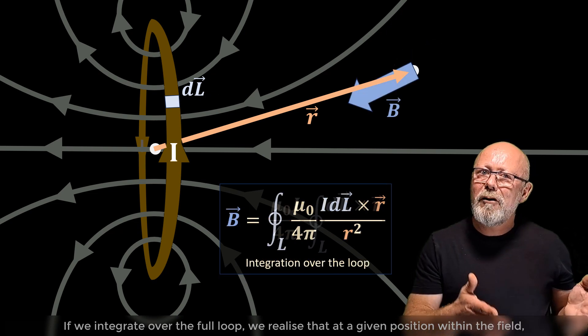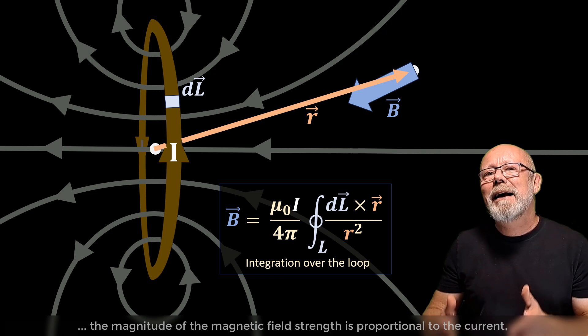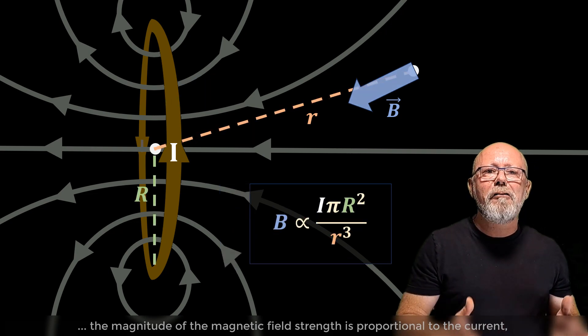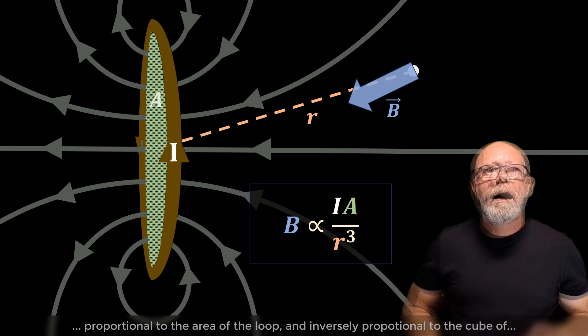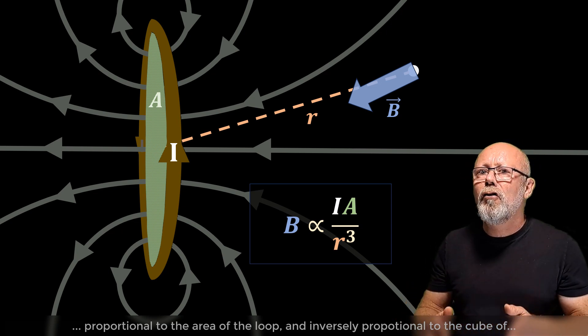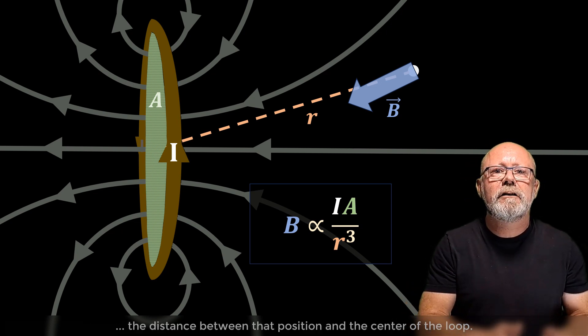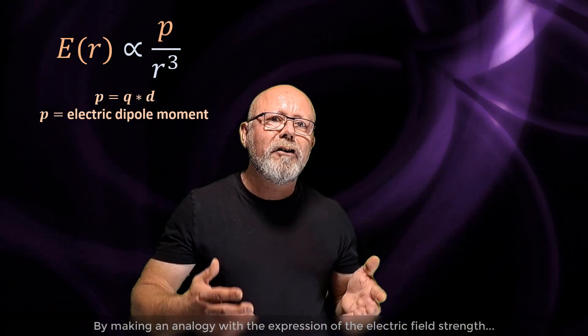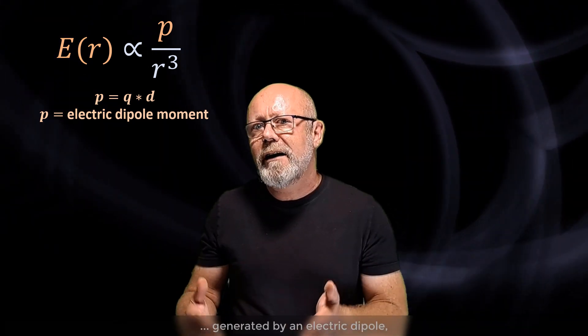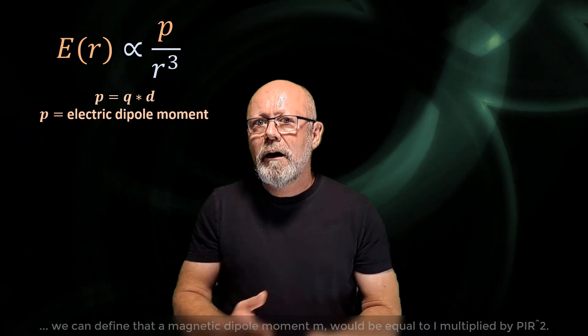If we integrate over the full loop, we realize that at a given position within the field, the magnitude of the magnetic field strength is proportional to the current, proportional to the area of the loop, and inversely proportional to the cube of the distance between that position and the center of the loop.